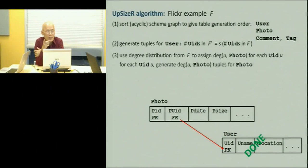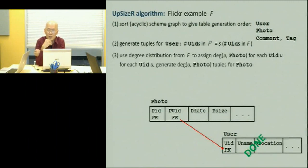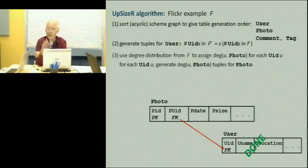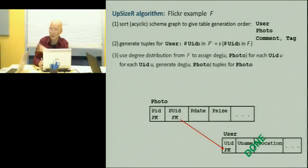So now I have two million synthetic users. To these two million users I assign a degree for each one according to the degree distribution. For each user, if this user has degree four, I just generate four photographs. If this user has degree eleven, I generate eleven photographs. That will settle the photo table.